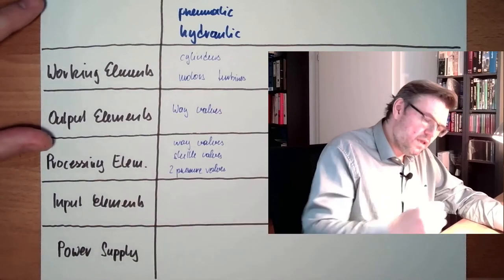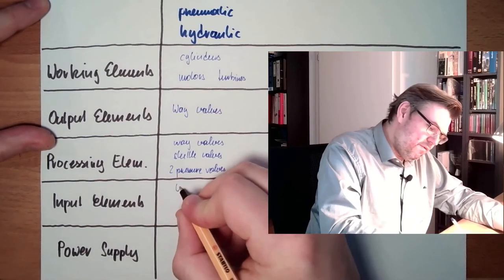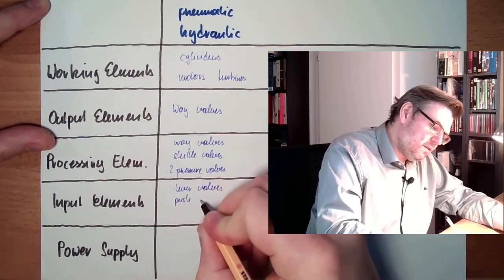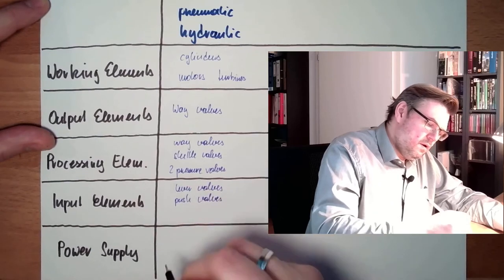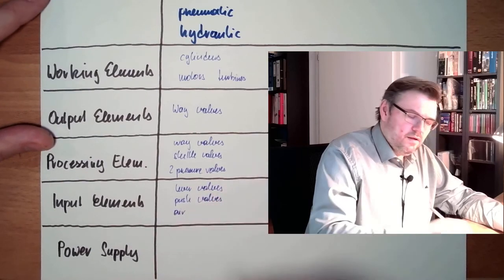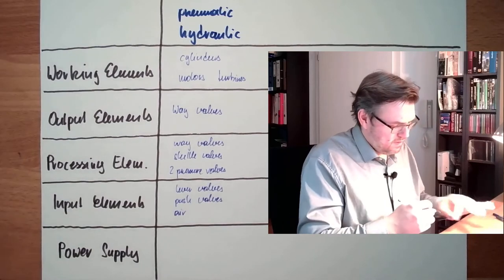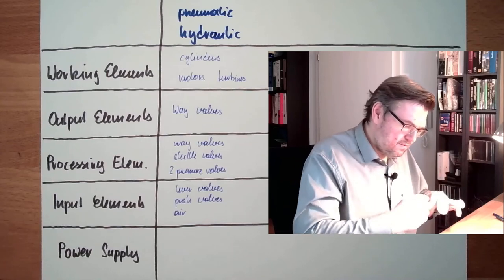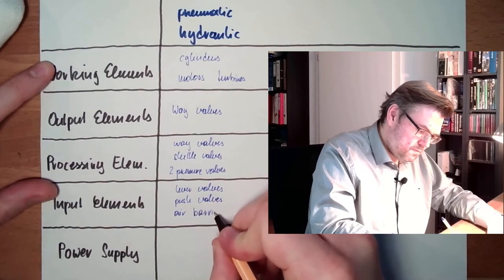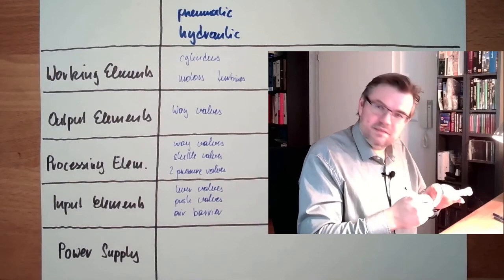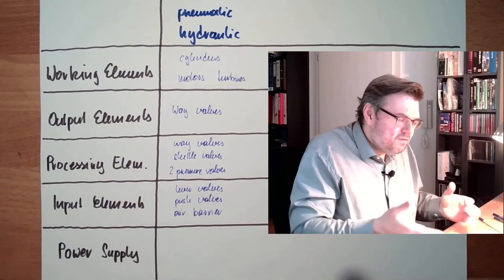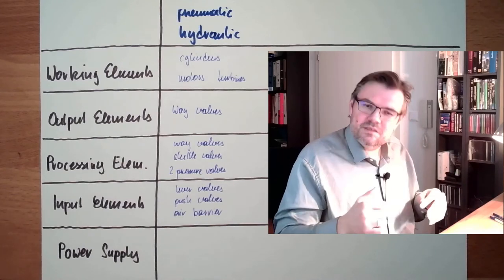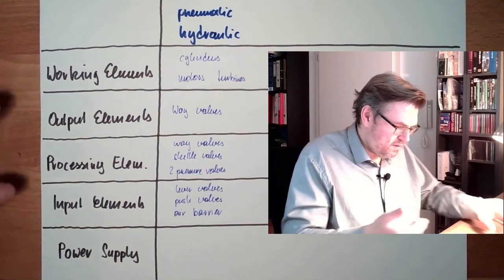Processing elements. Input elements: lever valves, push valves with a push button, some air barrier, something like this. Input elements, checking if something is there or not, push valves with special extensions that it can be switched simply. Input elements.